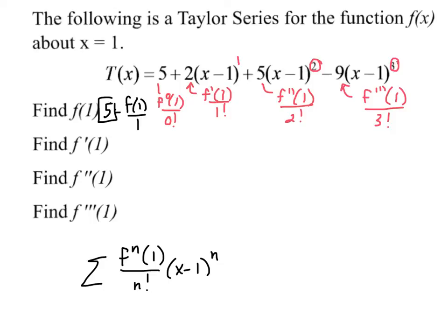Let's do the second one here. That means that the coefficient 2 is equal to f prime of 1 over 1 factorial, which is 1. Well, multiply both sides by 1, you get 2. So f prime of 1 must be 2.